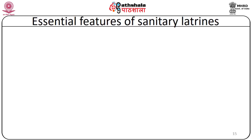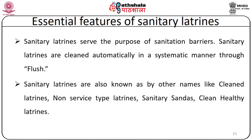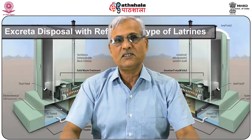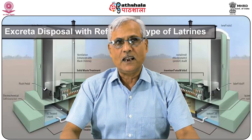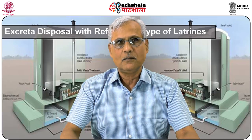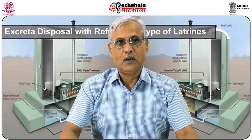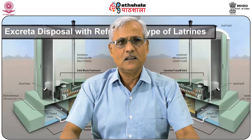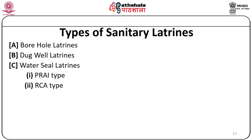Now coming to the essential features of sanitary latrines. Sanitary latrines serve the purpose of a sanitation barrier and are cleaned automatically in a systematic manner through flush. They are also known as clean latrines, non-service type latrines, sanitary sandas, or clean healthy latrines. They prevent direct contact of faeces with the five agents of disease transmission: water, fingers, flies, soil, and food. Types of sanitary latrines include: borehole latrines, dug well latrines, water seal latrines (of two types: PRI type and RCA type), septic tank, aqua privy, and shallow and deep trench latrines.